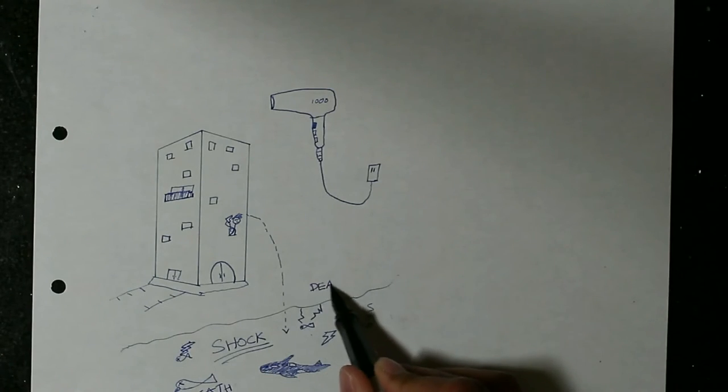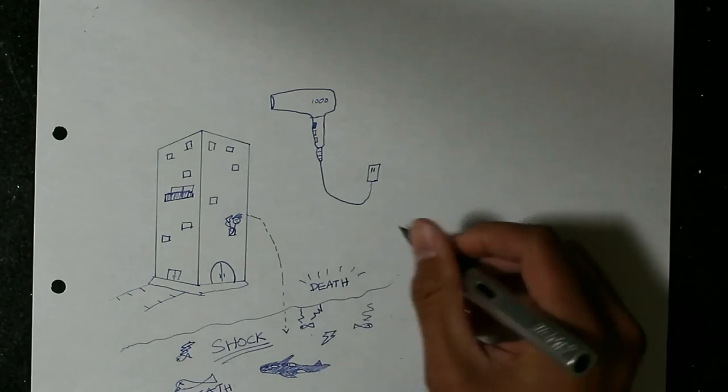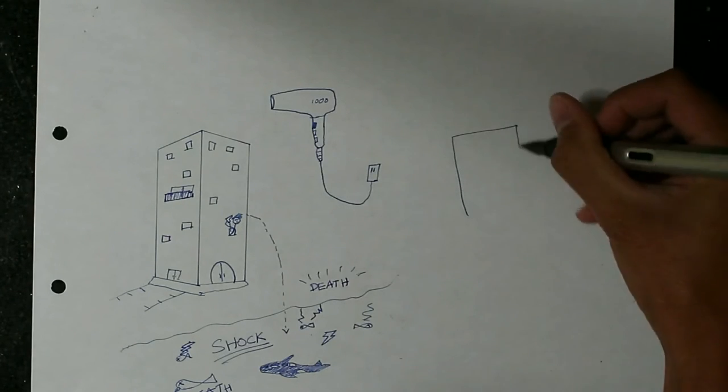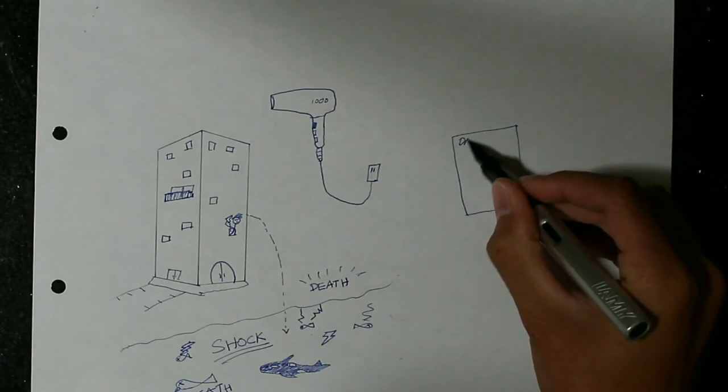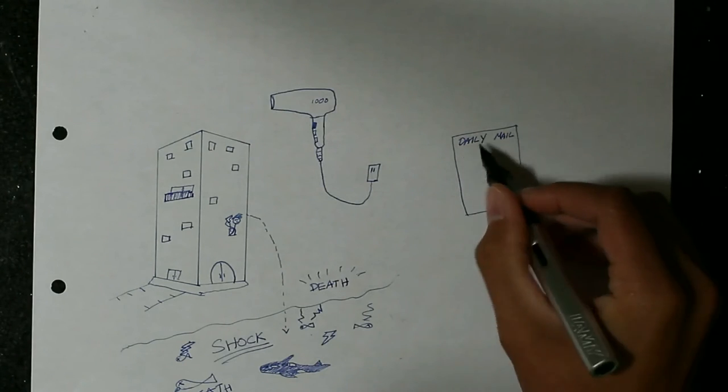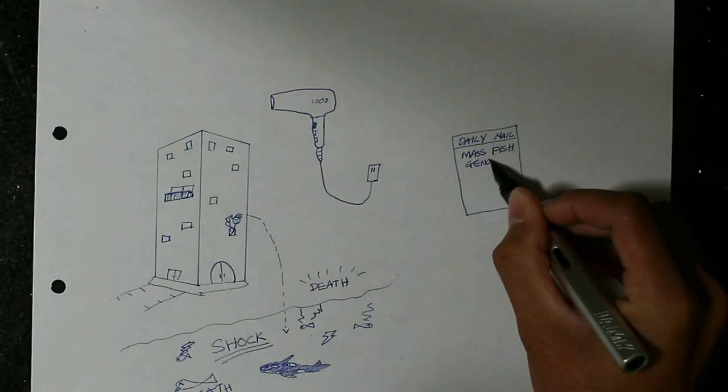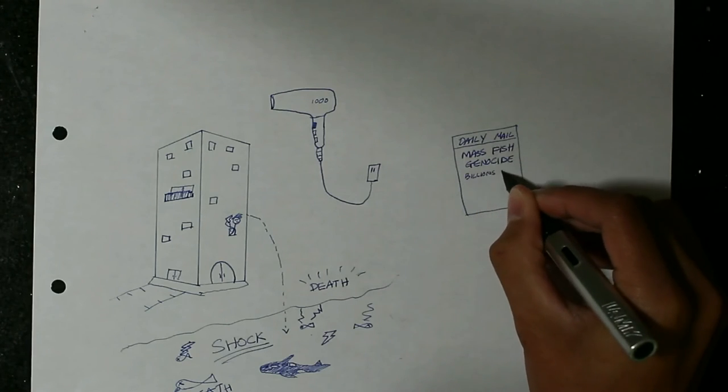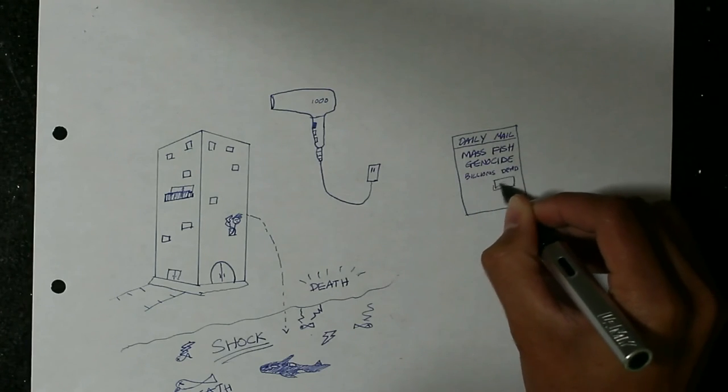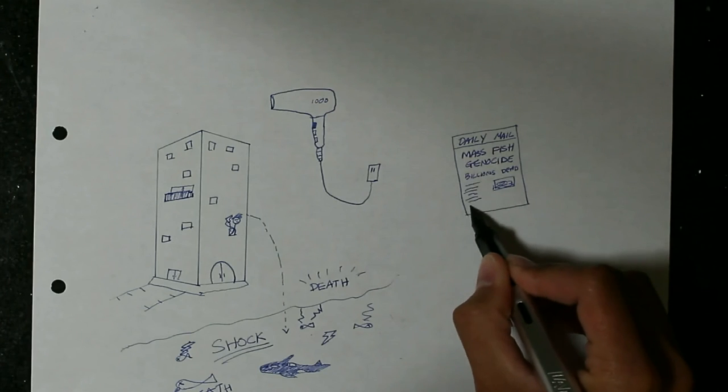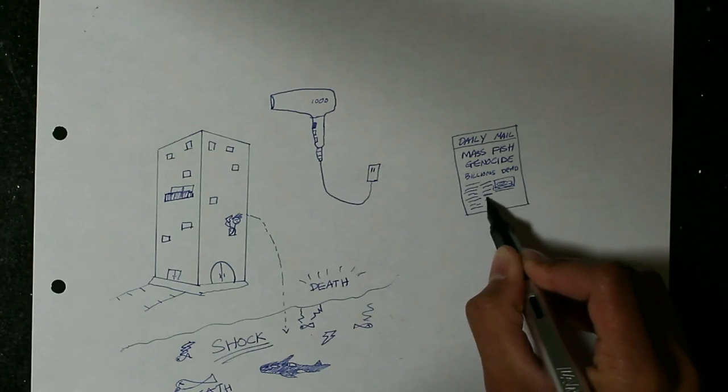Because that's not what's going to happen. Electricity always finds the closest path to ground, which is typically straight to the ground, not through all the animals. So if you jumped in a bathtub with a hair dryer, probably nothing would happen, unless you were touching the drain because that's metal.